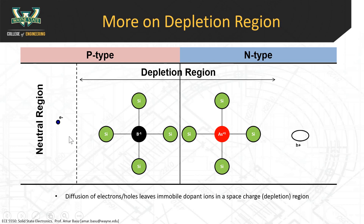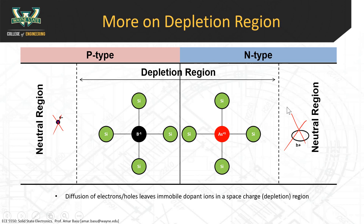The electron recombines, and the hole also recombines in the depletion region. When they diffuse across and recombine, it takes a little bit of time — it doesn't recombine right at the edge. It diffuses over roughly one or a few diffusion lengths before it recombines. So you get into a region we call the neutral region, where there are no space charges. All the space charges are in the depletion region — the region depleted of electrons and holes. You end up with a neutral region on the P side and a neutral region on the N side.